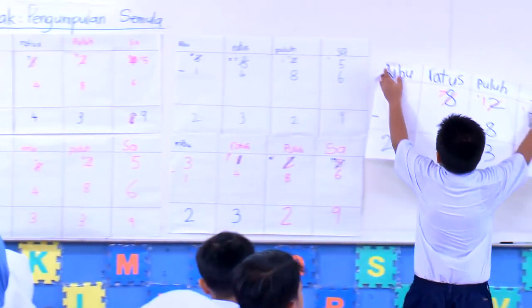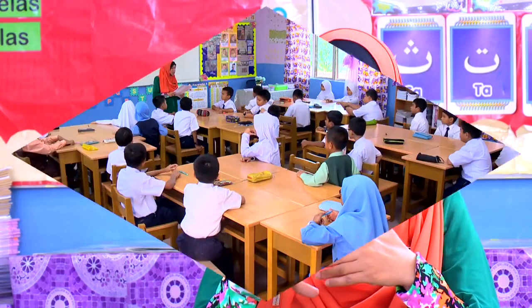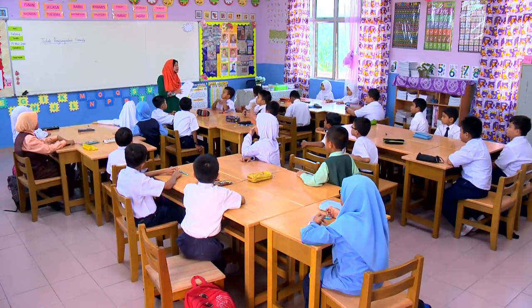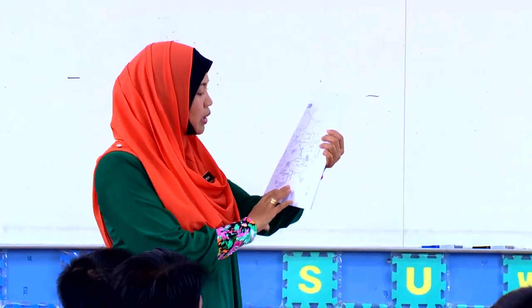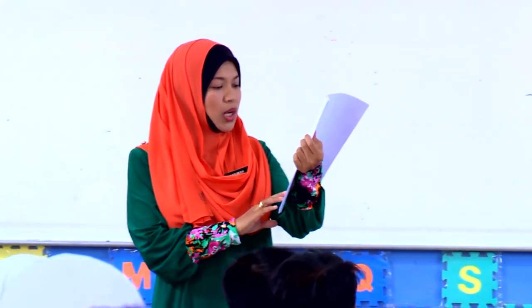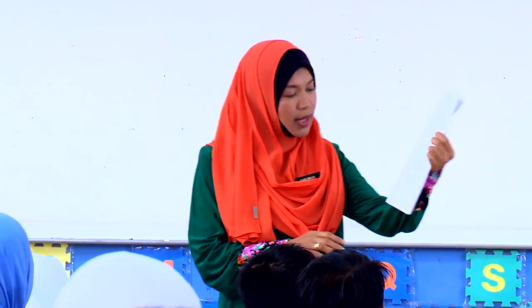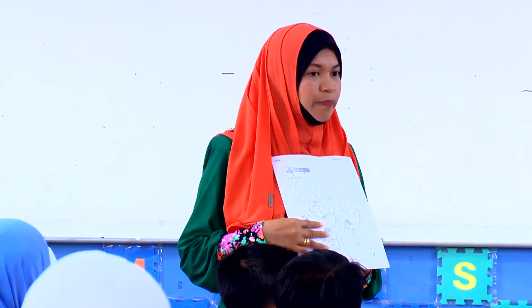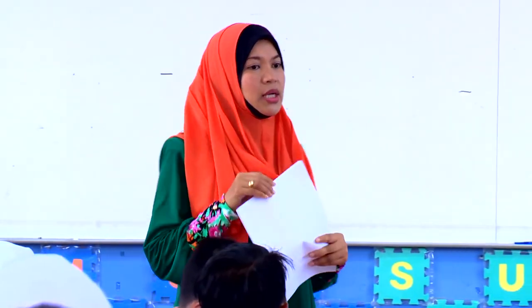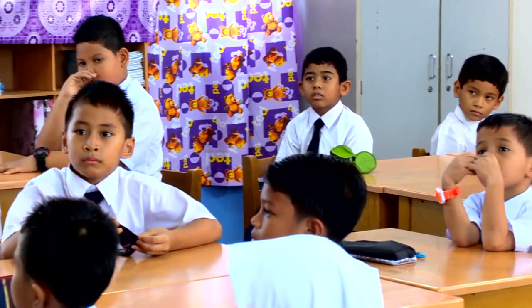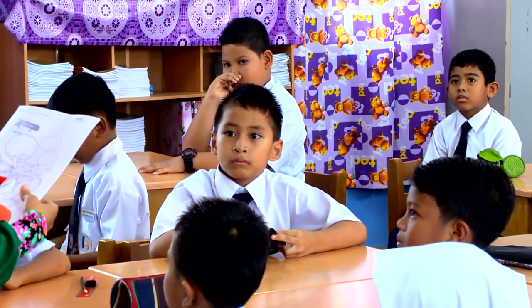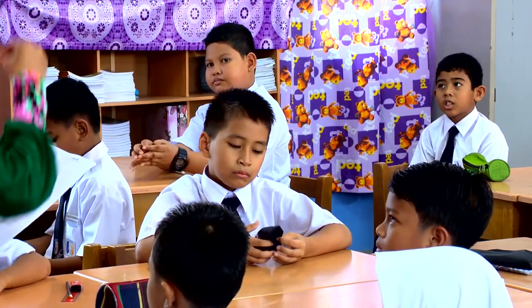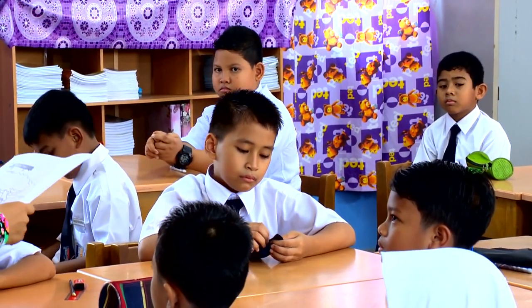So dekat sini, saya ada lembaran kerja. Dalam lembaran kerja ni, terdapat lebih kurang enam soalan. Kamu kena siapkan secepat yang mungkin. Sekarang cikgu nak lihat sejauh mana kamu faham teknik yang kita gunakan, sejauh mana kamu boleh menjawab soalan berkaitan dengan tolak yang melibatkan nombor di atas lebih kecil daripada nombor yang di bawah.